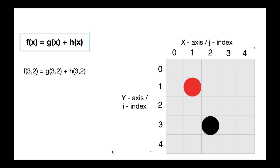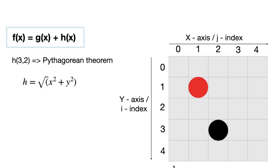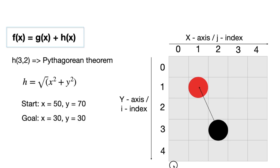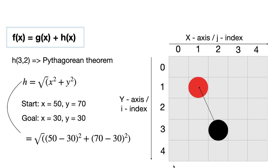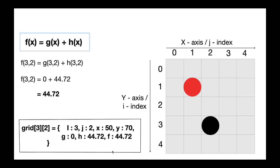Let's calculate the value of f for the cell to understand this equation better. The g value is the distance between the nodes. So from 3,2 to itself the distance is 0, so g will be 0. The h value is the distance from the node to the goal. We can calculate the distance using the Pythagorean theorem, so h will be 44.72. Therefore f will be 44.72. And these are the values that the cell will hold.